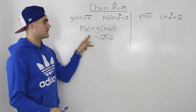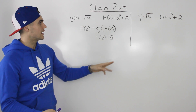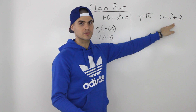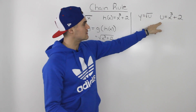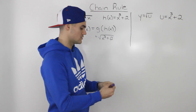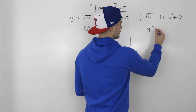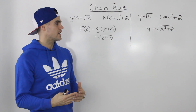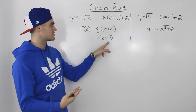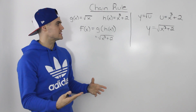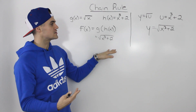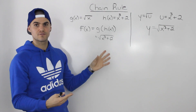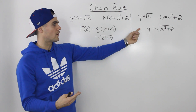Another way this composite function can be represented is: y is equal to the square root of u, and u is equal to x to the power of three plus two. Notice that if we substitute the expression for u into y, we end up with the same composite function: y equals the square root of x to the power of three plus two. I'm showing you two different formats because the chain rule is usually given in two different types of notation, depending on how the composite function is presented.